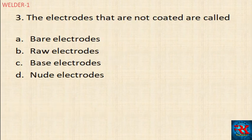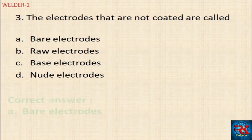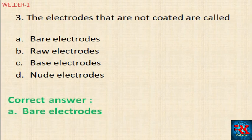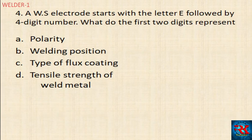The electrodes that are not coated are called: bare electrode, raw electrode, base electrode, or nude electrode. The correct answer is bare electrode — that is the one that is not coated.